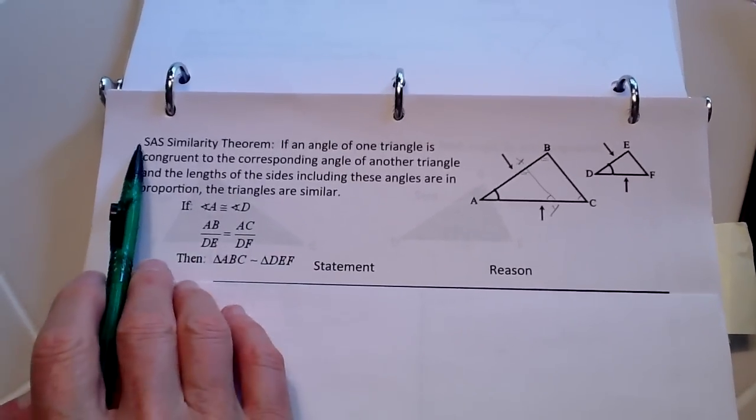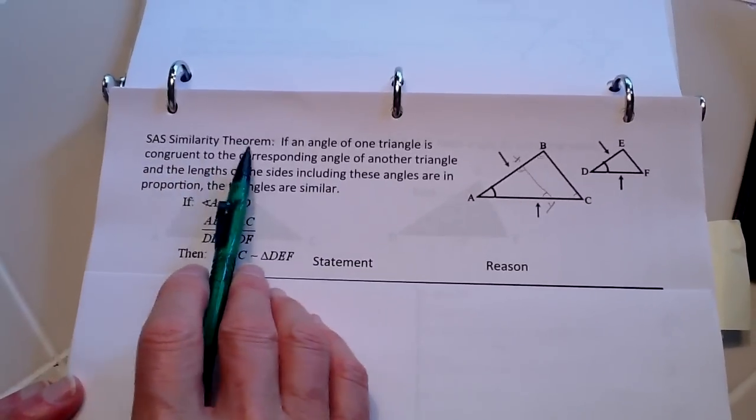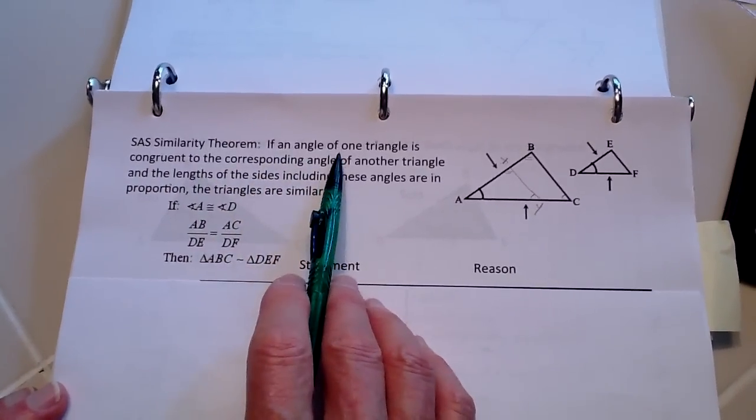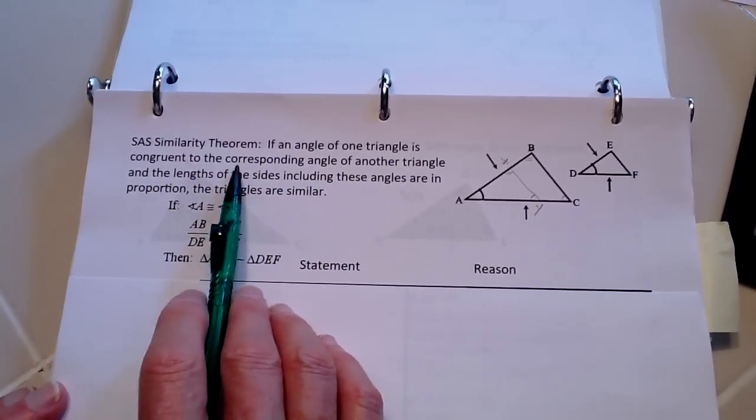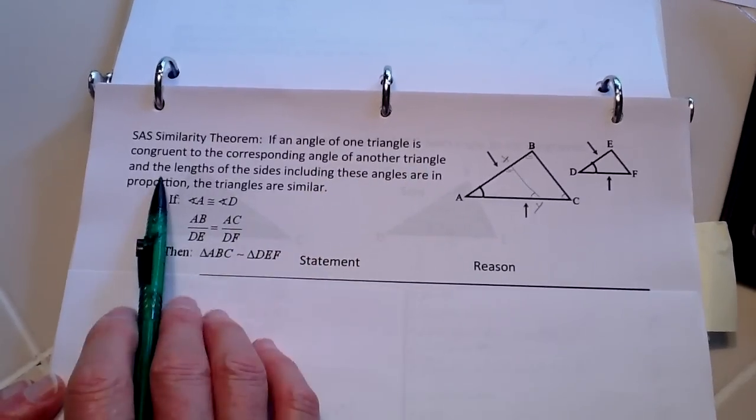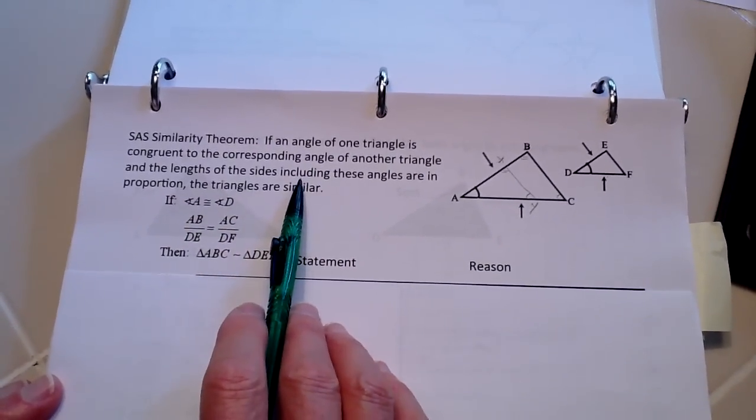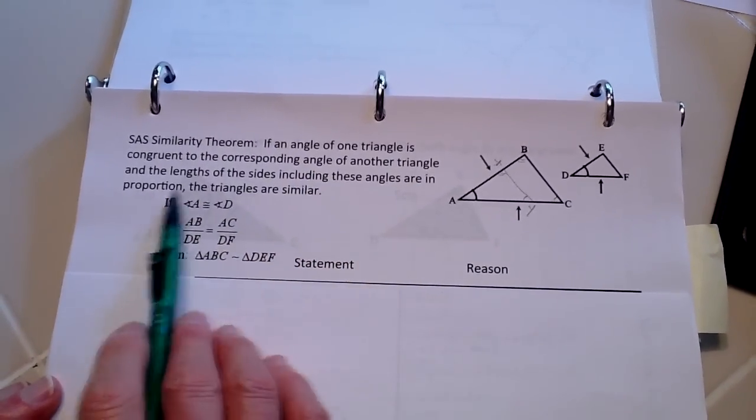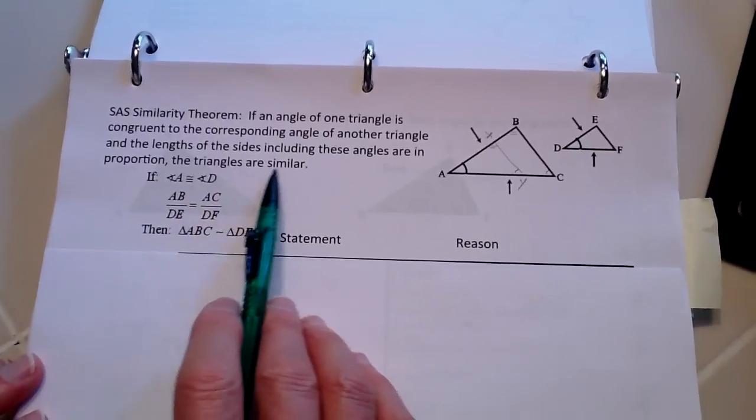We can prove the side-angle-side similarity theorem. If an angle of one triangle is congruent to the corresponding angle of another triangle and the lengths of the sides including these angles are proportional, then the triangles are similar.